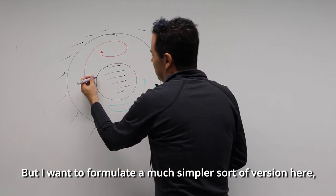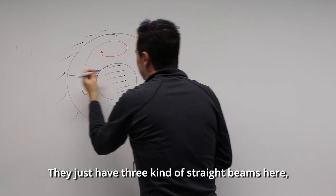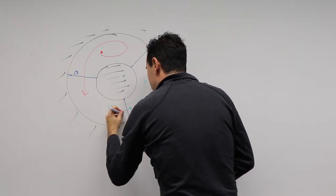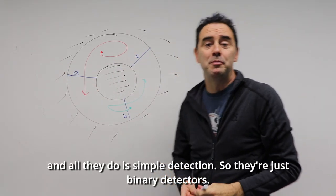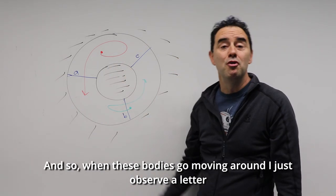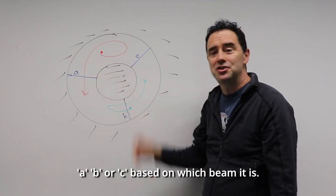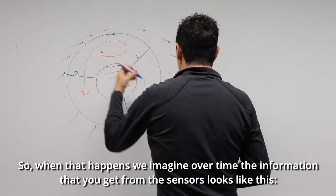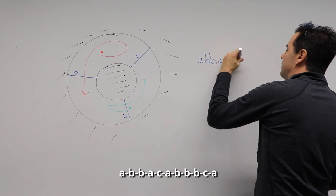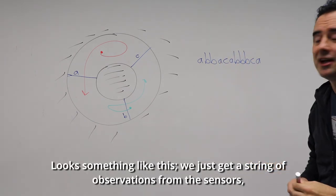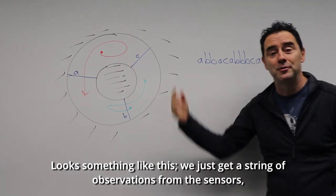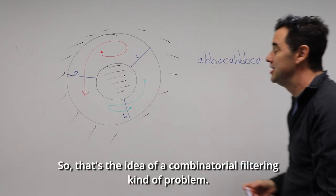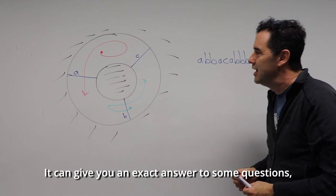Instead, I want to formulate a much simpler version where we put in these beam detectors — just three straight beams labeled A, B, and C. They're simple binary detectors. When the bodies move around, I just observe a letter A, B, or C based on which beam is crossed. Over time the information looks like a string: A, B, B, A, C, A, B, B, B, C, A... and then I want to ask: what do we know about where these two bodies have gone?